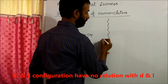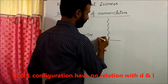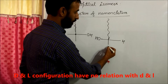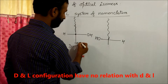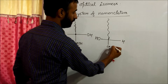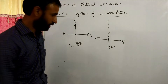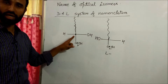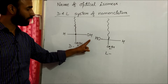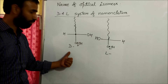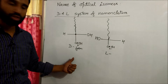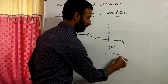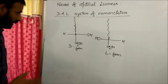If OH is on the left side of the last carbon, that is called the L form. For most sugars, the last carbon is CH2OH. So, D form and L form: if OH is on the right side of the last carbon, that is D configuration; if OH is on the left side, that is L.